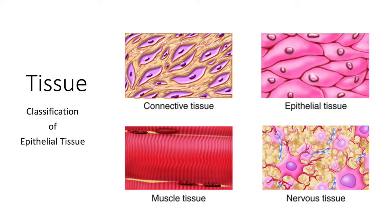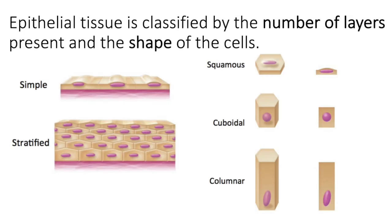When we classify epithelial tissue, we classify it based on the number of layers — so it's either simple or stratified — and then the shape of the cell at the apical surface. Those shapes can be squamous, cuboidal, or columnar. Let's go through each of the classifications of epithelial tissue.